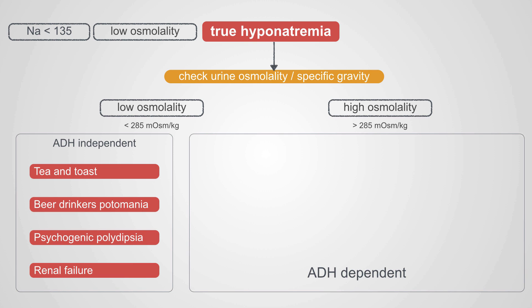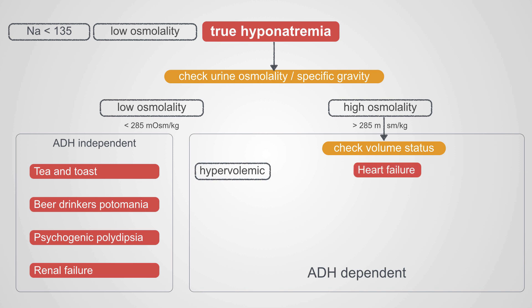On the other side, we have ADH-dependent hyponatremias. These patients will have high urine osmolalities — the higher the measured urine osmolality, the more accurate this diagnosis is. The next step is to check volume status, because that is how we divide these patients up.